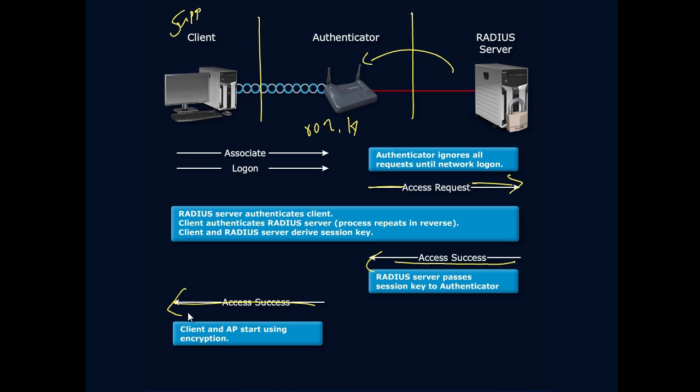To recap this interesting process: the client associates and logs on to the authenticator, providing logon information. An 802.1x frame is passed to the RADIUS server containing that information. The process then goes in reverse — the RADIUS server authenticates itself to the client, the client confirms it's talking to the right server, and on success the RADIUS server passes a session key to the authenticator, which is then passed down to the supplicant. Please know this process if you are moving forward.